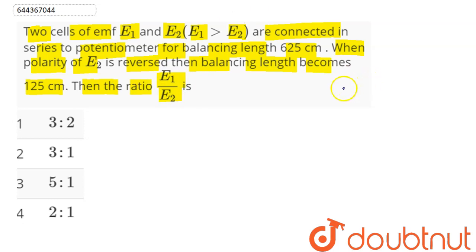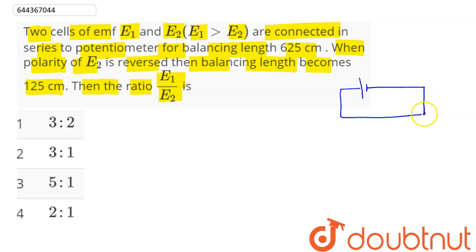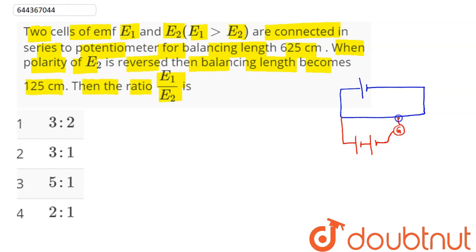Here is our potentiometer wire. The question says when e1 and e2 are connected in series — this is our e1, this is our e2, and this is our galvanometer. The balancing point is given as 625 centimeters.